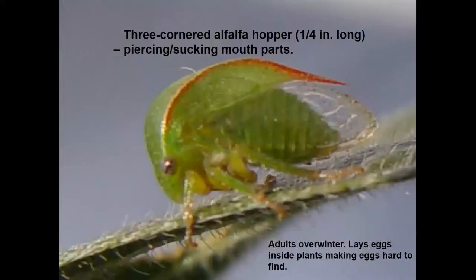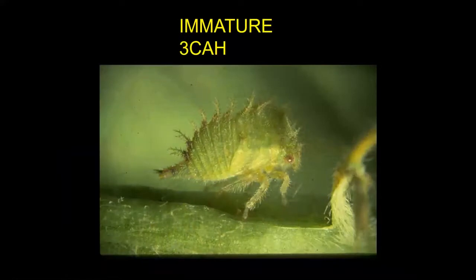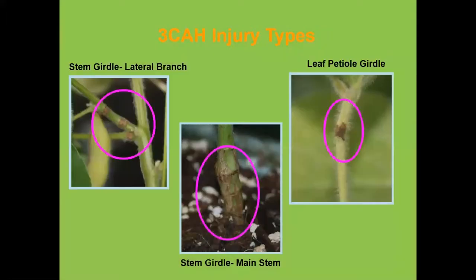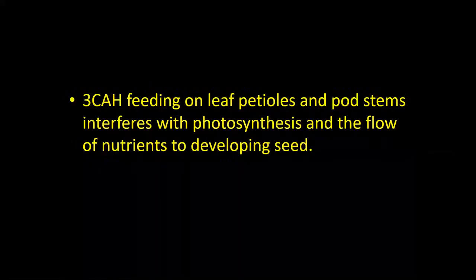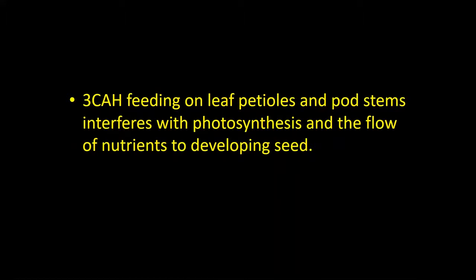Three-cornered alfalfa hoppers will girdle plants with their piercing-sucking mouthparts and can cause the plants to fall over later on. Immature three-cornered alfalfa hoppers are very unusual looking and won't get mixed up with anything else. They will also do the same type of girdling. They'll girdle the lateral branches, the main stems, and the leaf petiole. It is thought that the girdling by these insects interferes with photosynthesis and the flow of nutrients to developing seed.